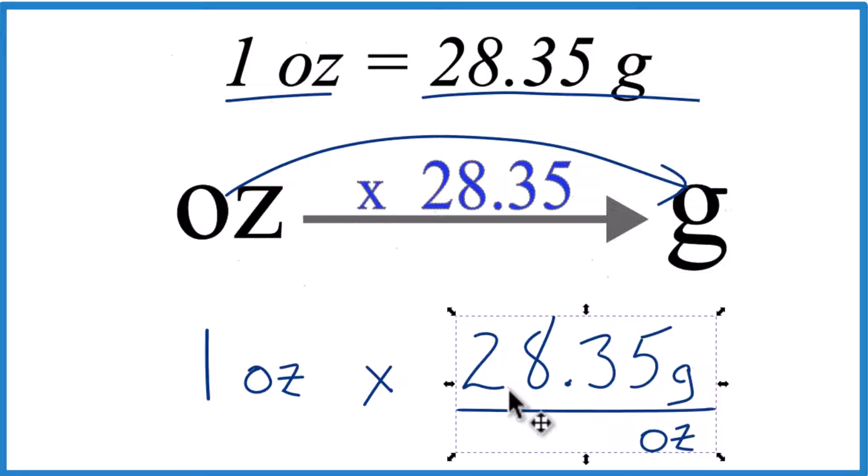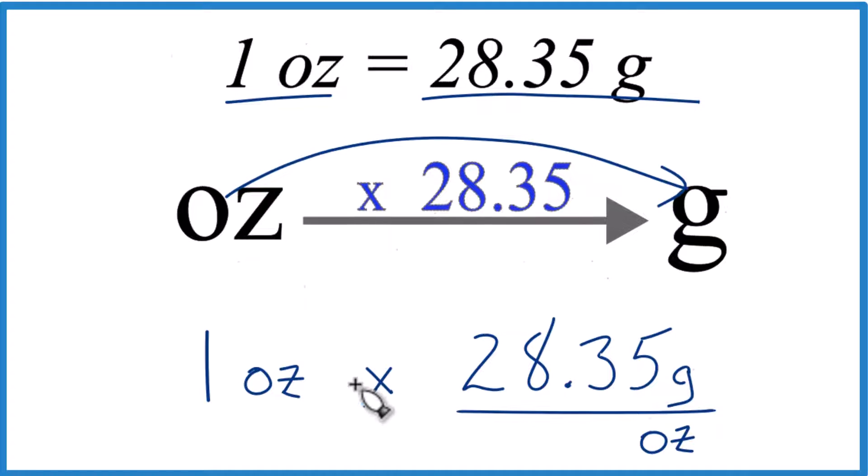But it's kind of important to understand that this is a conversion factor, and that one ounce is 28.35 grams. Here we're saying that in one ounce we have the 28.35 grams. But this way, when we multiply, ounces cancel out, we're left with grams.